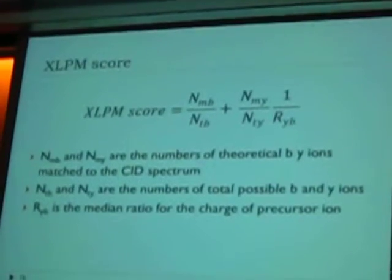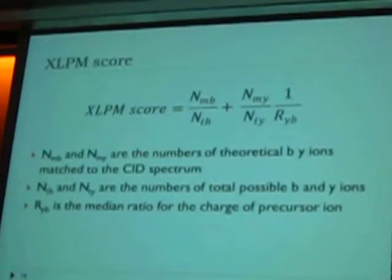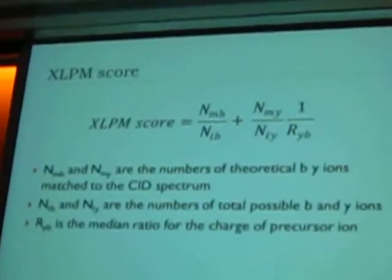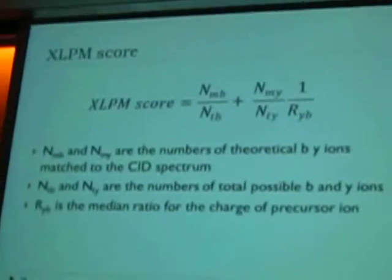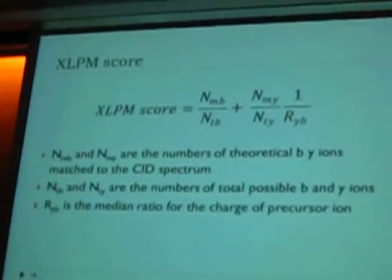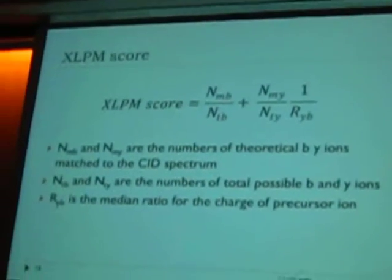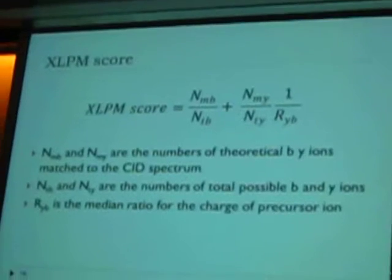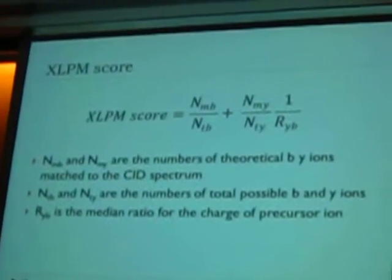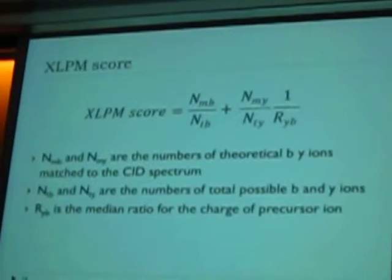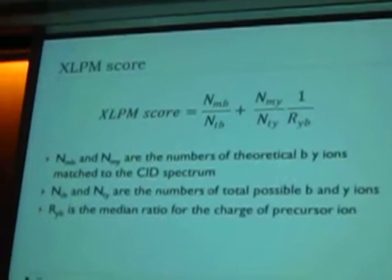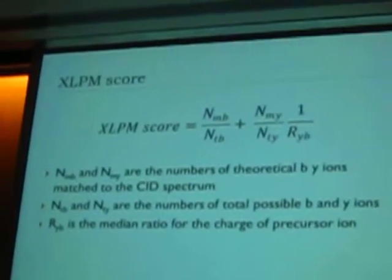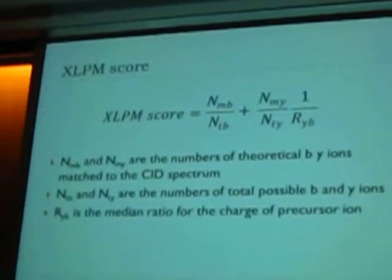This is the scoring method we are using. It's basically an extension of percentage match — it's a fraction of B ions and a fraction of Y ions, but as we are not looking at all the Y ions, that fraction gets corrected by the median value we observed from the NIST data.